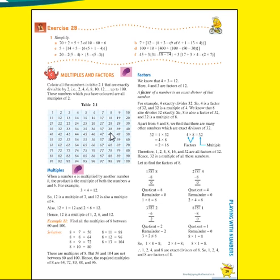Here we have a table — Table 2.1. Color all the numbers in Table 2.1 that are exactly divisible by 2. We have to color all the multiples which are divisible by 2, that is 2, 4, 6, 8, 10, 12, and so on up to 100. The table contains the numbers up to 100.